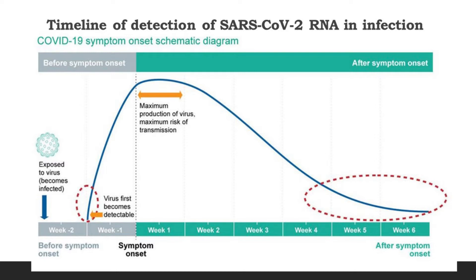In the third week after the exposure, he has the maximum production of virus, in which the rate of transmission of SARS-CoV-2 also becomes very high. Gradually, the production of virus as well as the transmissibility reduces at the sixth and seventh week.